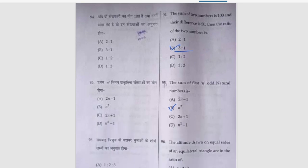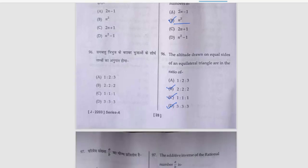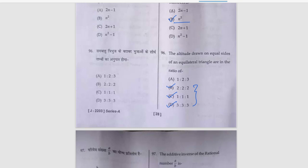Next: sum of two numbers is 100 and their difference is 50, then the ratio of two numbers is 3 ratio 1. Next is sum of first n odd natural numbers, that is n squared. The altitude drawn on the equal side, all the answers are B, C, D because if we have the ratios, that is also 1 ratio 1.